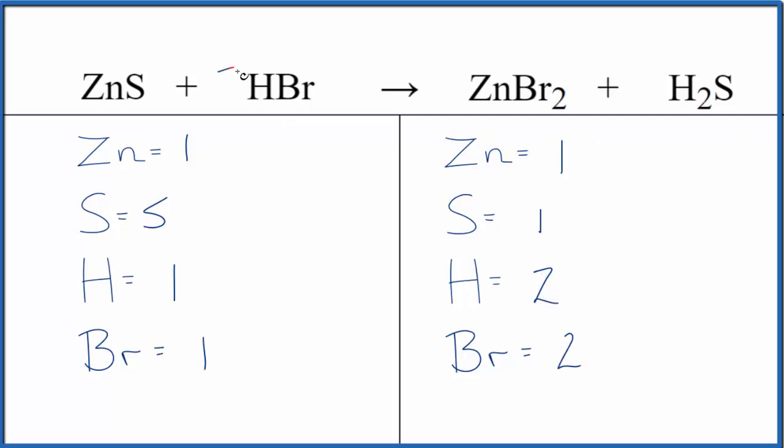So all we really need to do is put a coefficient of two in front of the HBr. One times two, that'll give us two hydrogens. So those are balanced. Two goes to everything. So two times the one bromine gives us two of those. We're done. This equation is balanced.